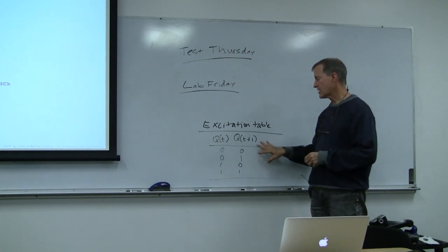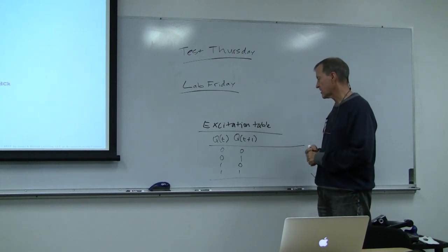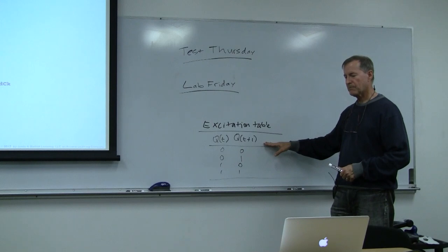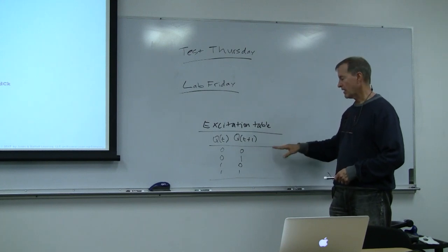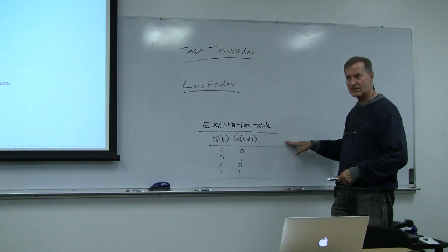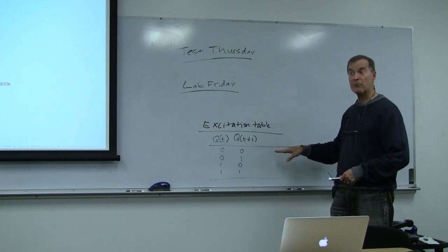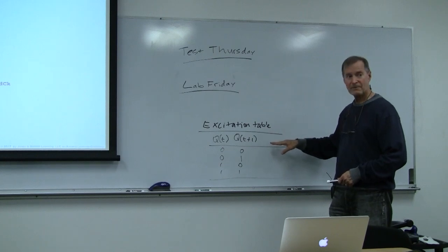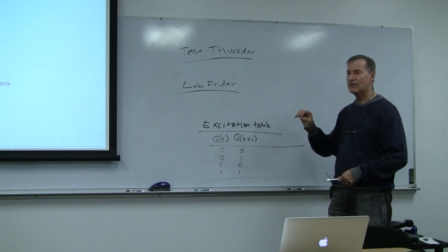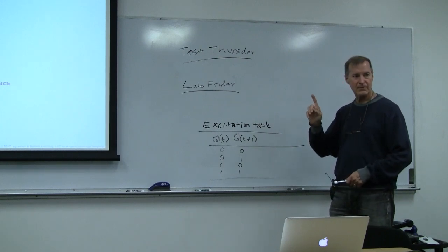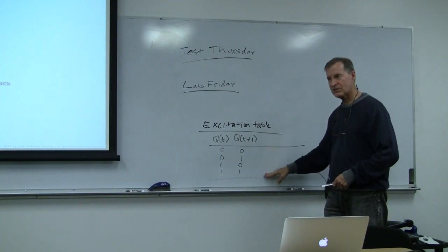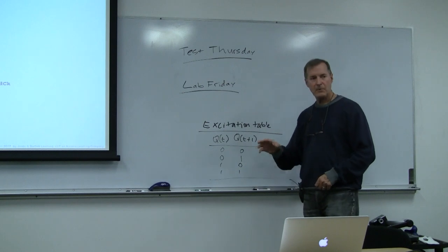For an SR flip-flop's excitation table, you ask: what are S and R at time T to make this transition? For a D flip-flop, there's only one input — what does D have to be? And for T, also only one input — what does T have to be? The excitation table answers these questions for each transition.